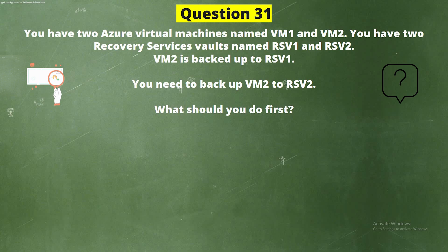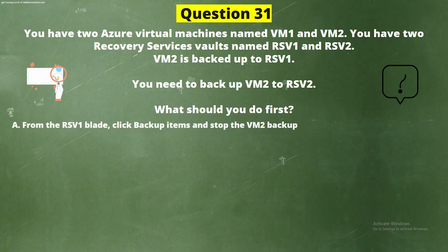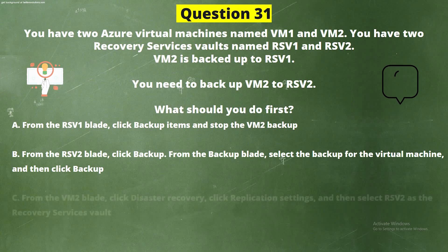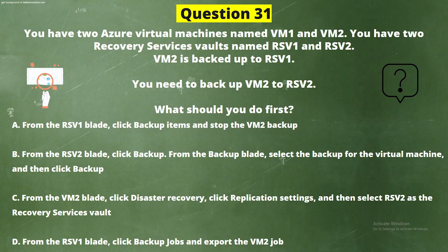Question 31: You have two Azure virtual machines named VM1 and VM2. You have two Recovery Services Vaults named RSV1 and RSV2. VM2 is backed up to RSV1. You need to backup VM2 to RSV2. What should you do first? Option A: From the RSV1 blade, click Backup Items and stop the VM2 backup. Option B: From the RSV2 blade, click Backup. Option C: From the VM2 blade, click Disaster Recovery, click Replication Settings, and then select RSV2 as the Recovery Services Vault. Option D: From the RSV1 blade, click Backup Jobs and export the VM2 job.